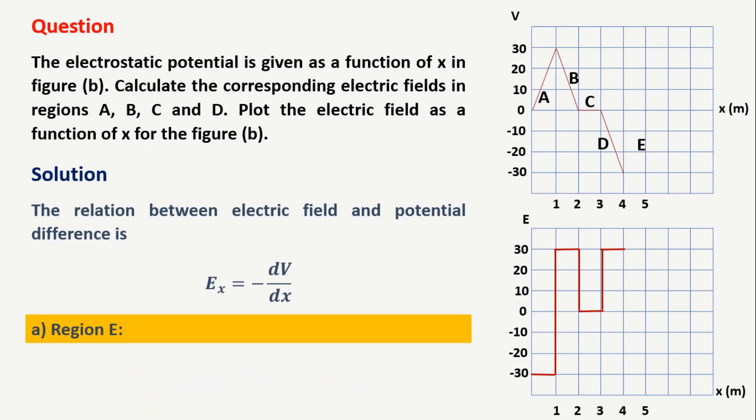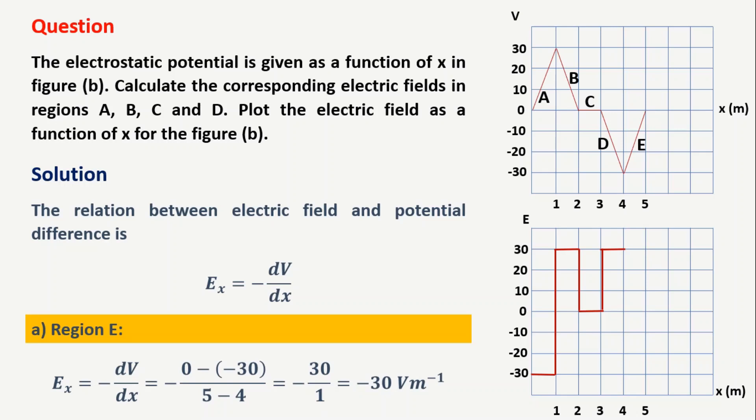Let us go for the last region, region E. Here the voltage goes from minus 30 volts to 0 volts. So the change in voltage is the final voltage minus the initial voltage: 0 minus (minus 30), which is plus 30. So E_x equals minus 30 divided by 1, giving minus 30 volts per meter. This is represented in the E versus x graph in the region from 4 to 5 meters at minus 30 volts per meter — it is a flip.